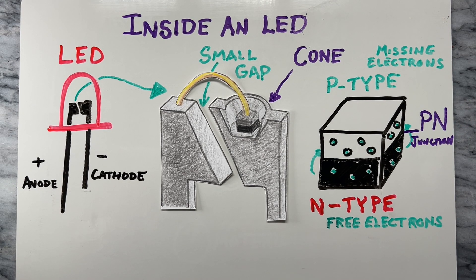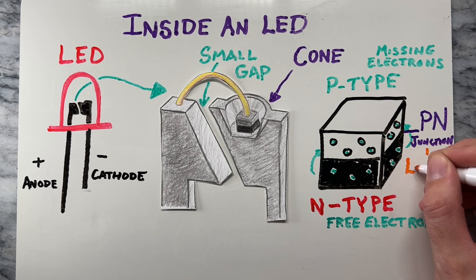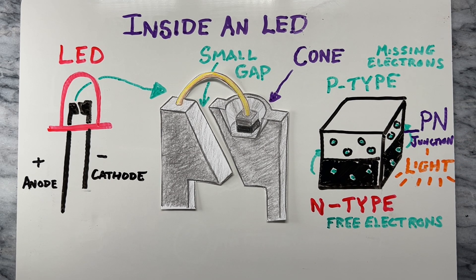When the LED is powered, photons are emitted from the P-N junction of the semiconductor, which produces the colored light. The cone helps to reflect the light out.